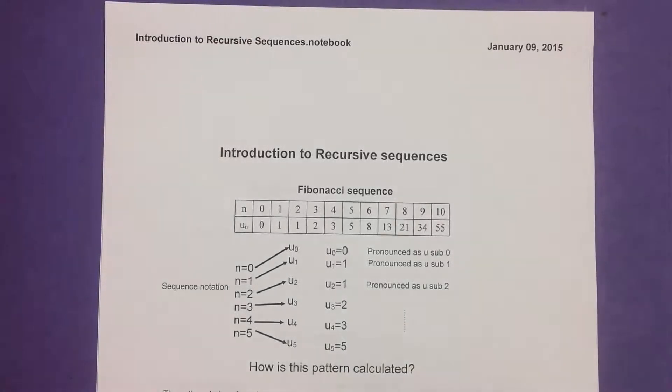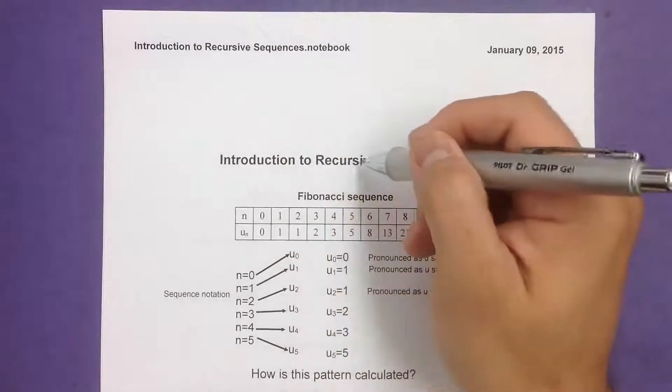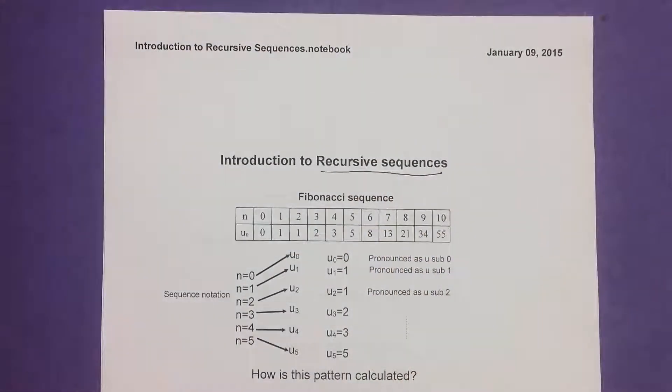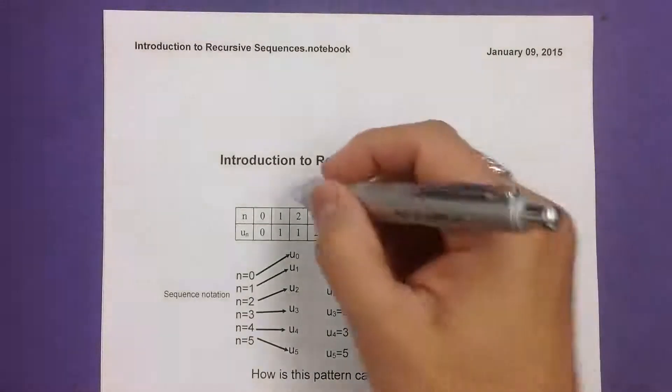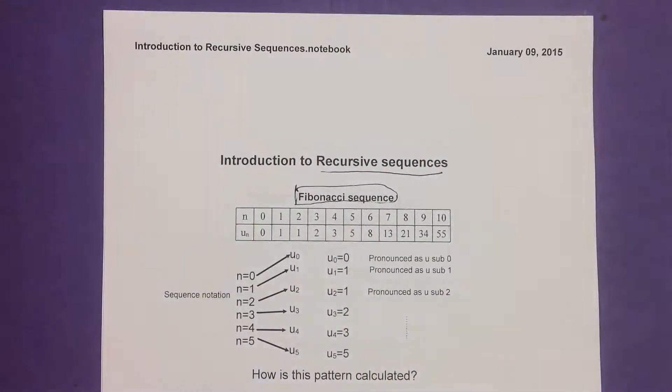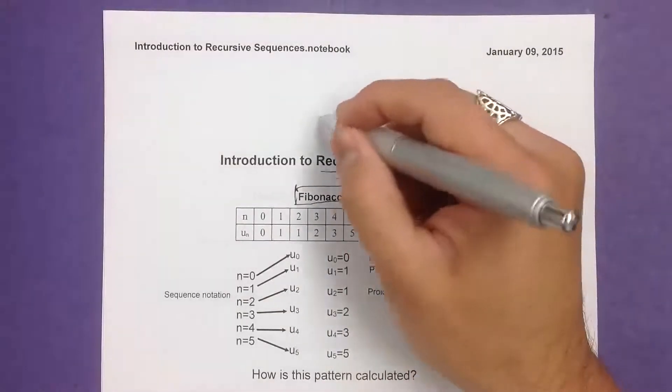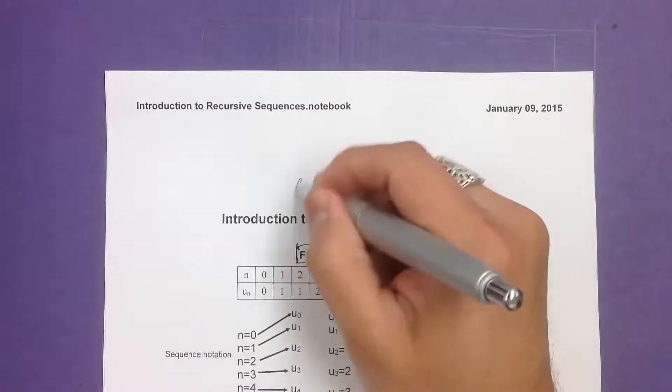All right, Mr. Elise here from AQR, and I'm going to be doing an introduction to recursive sequences. You have to learn a couple of things. You want to start with something called the Fibonacci Series. The Fibonacci Series basically states that you start off with two different numbers, like 0 and 1.